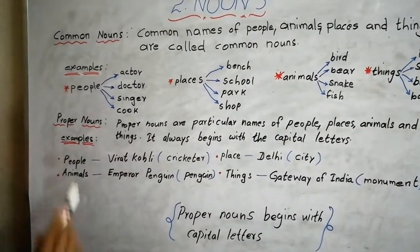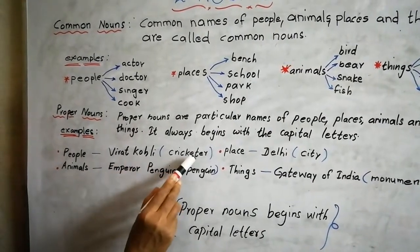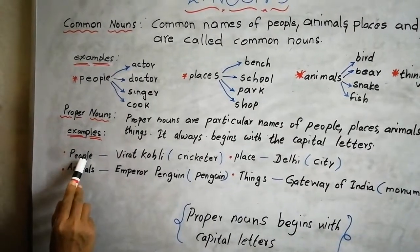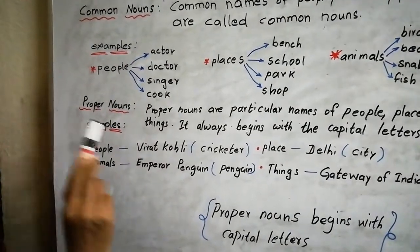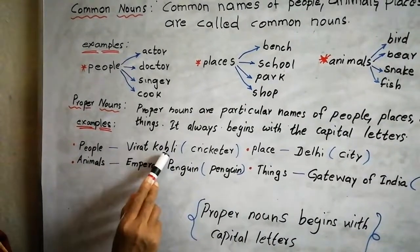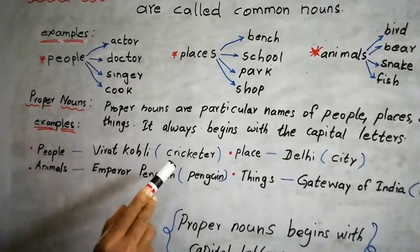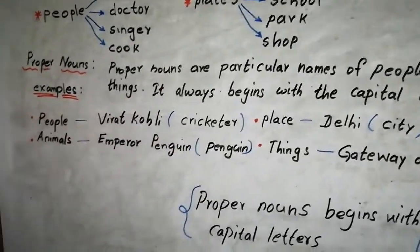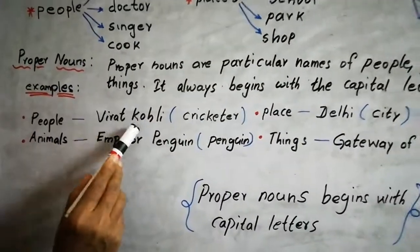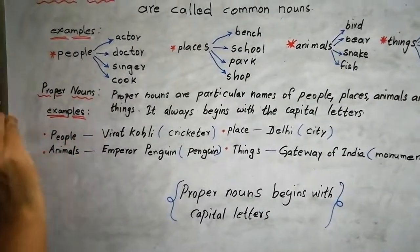For example, Virat Kohli — he is a cricketer. For people, we have given the example Virat Kohli. He is a famous person, a cricketer. So for a particular or special person, we have given the name here.